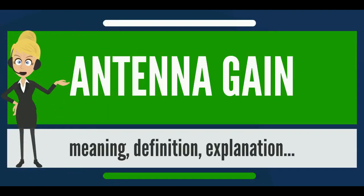In electromagnetics, an antenna's power gain, or simply gain, is a key performance number which combines the antenna's directivity and electrical efficiency. As a transmitting antenna, the gain describes how well the antenna converts input power into radio waves headed in a specified direction. As a receiving antenna, the gain describes how well the antenna converts radio waves arriving from a specified direction into electrical power. When no direction is specified, gain is understood to refer to the peak value of the gain.